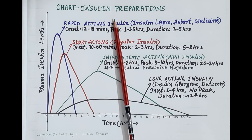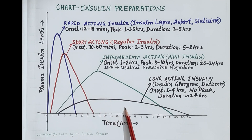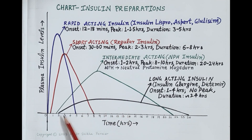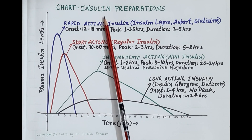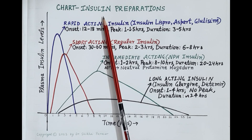Hello students. In today's video we will understand four different types of insulin preparations with the help of a chart. Insulin is usually injected in the subcutaneous tissue, that is in the fatty tissue under the skin. Insulin is a peptide hormone that reduces levels of glucose in the blood and normalizes them.